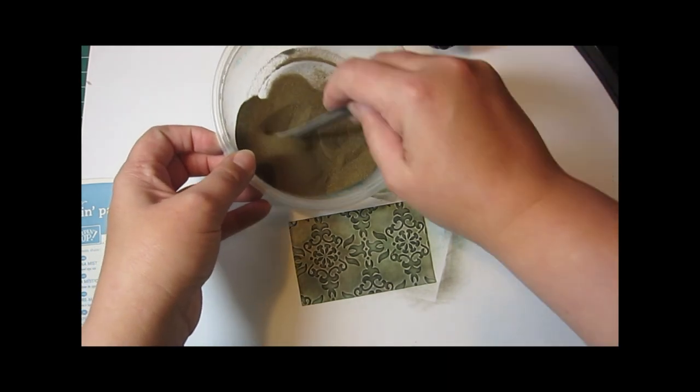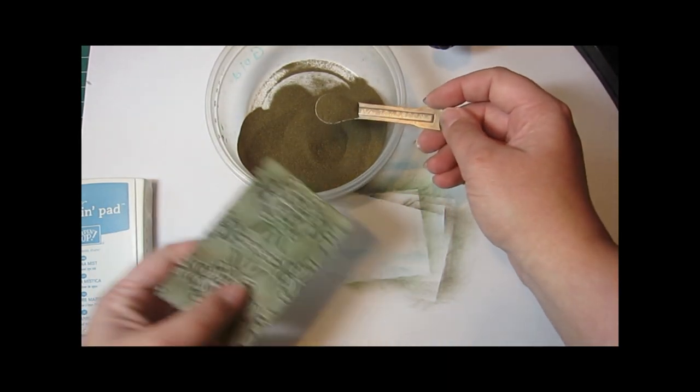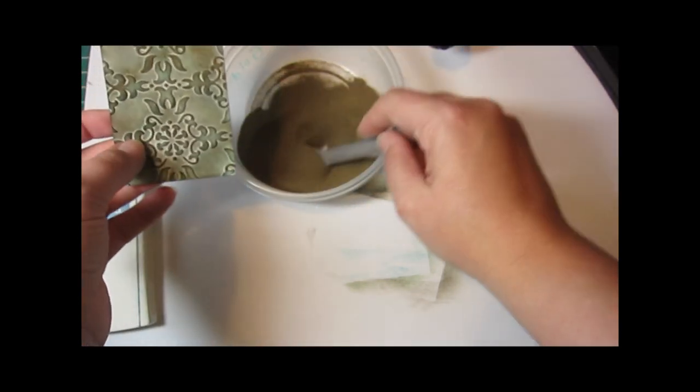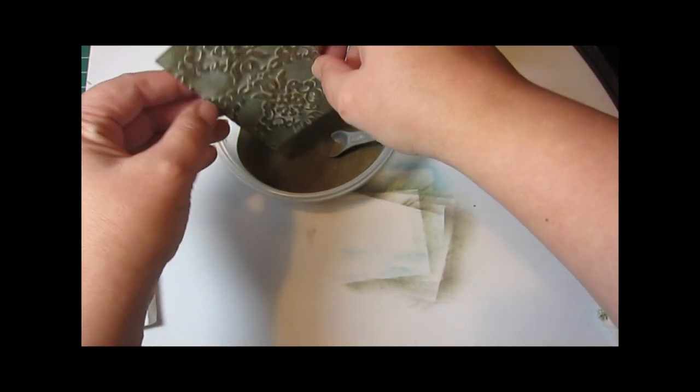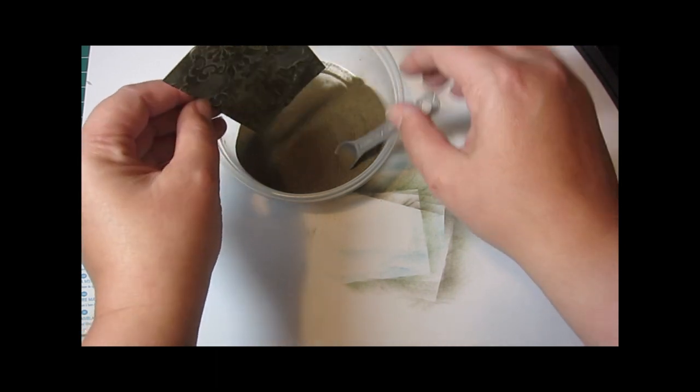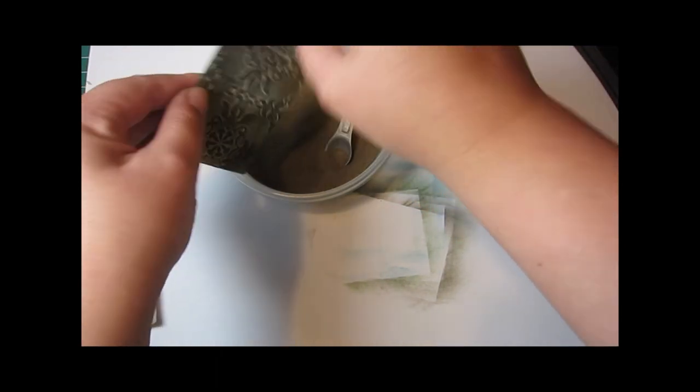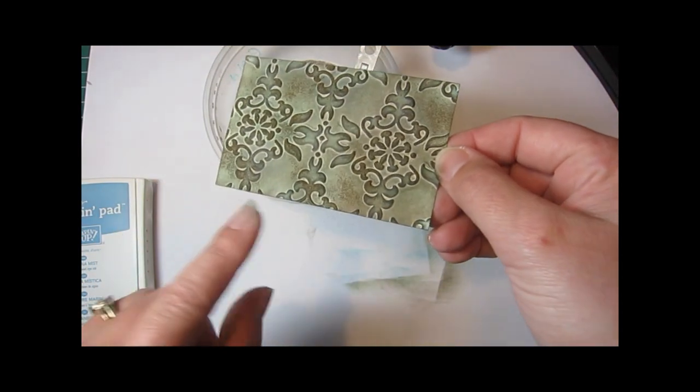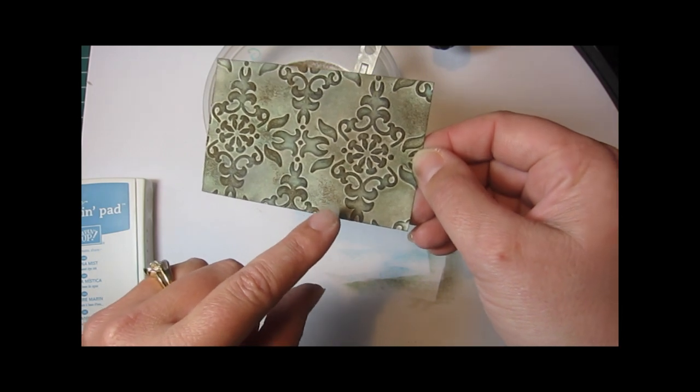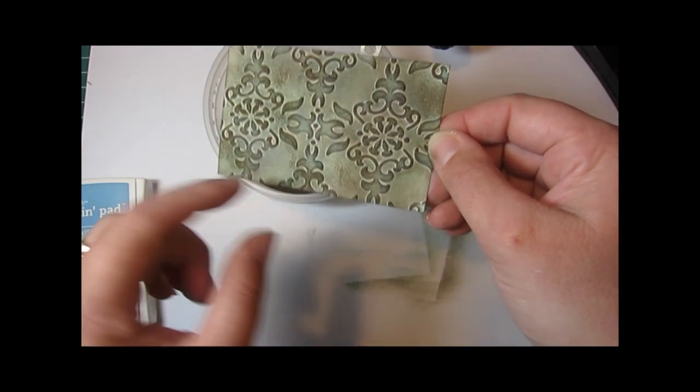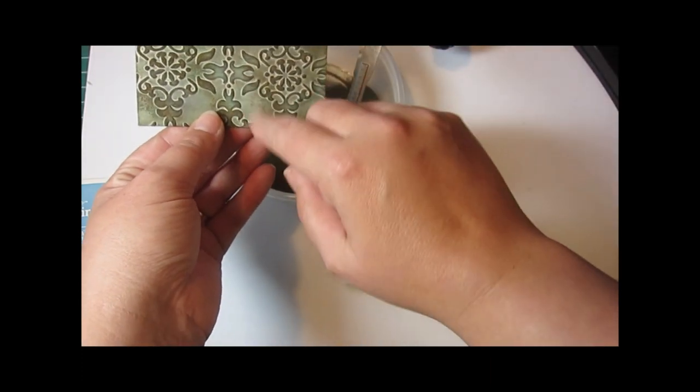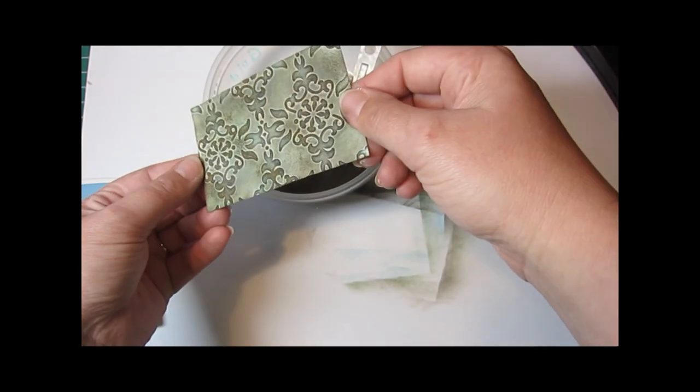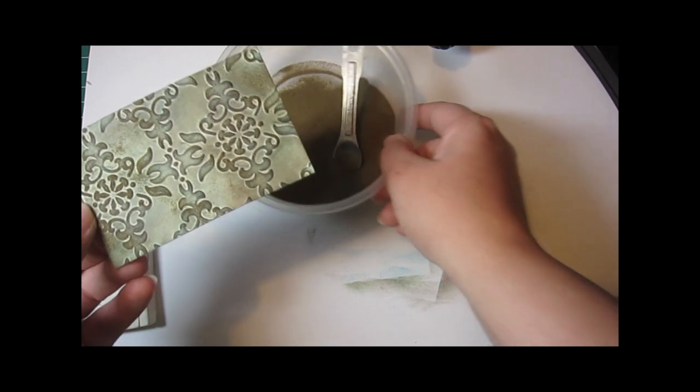Next we're going to take a metallic embossing powder. In this case I'm using gold but you could use silver or copper, really any kind of metallic, and just sprinkle that over your whole piece. Tap off all of the excess. Now I do have kind of too much for my taste. You can have as much as you want but if you have too much that's no problem. You can just brush off some with your finger or with a brush or if you need a little bit more you can always add more later after we get this embossed the first time.